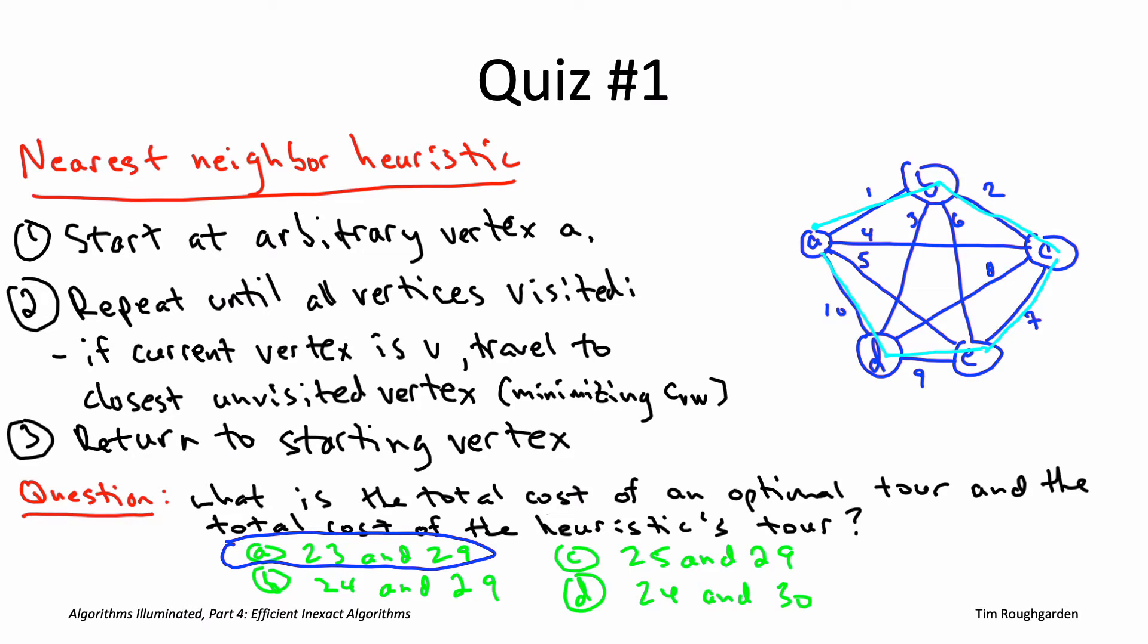So the nearest neighbor heuristic's tour just follows the perimeter, and its overall cost is indeed 29. How about the optimal tour? Well, there's only 12 options, so you can do exhaustive search. There is one that has cost 23, and I'll trace that out here in magenta.